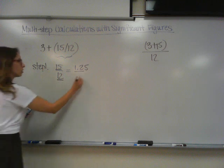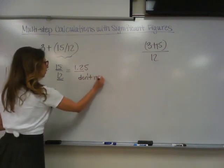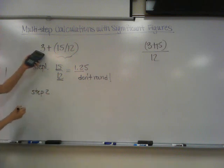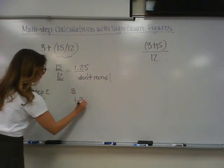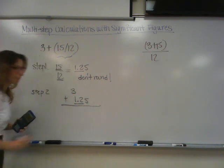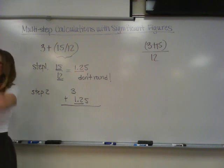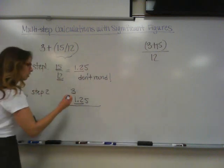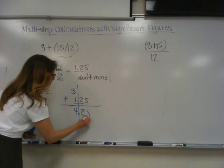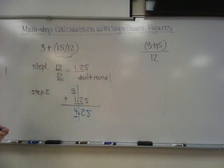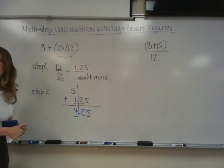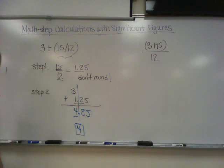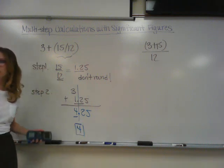Can I round? No, not yet. Now step number 2: add 3 to 1.25, leaving the 1.2 underlined. Where should I draw my line? After the 3. So you get 4.25 — you underline the 4. Are you going to round the 4 up? No, because that's a 2. So your answer is 4.